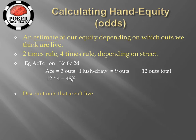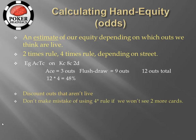Your estimate is always only going to be as good as your understanding of villain's range. For example, in this particular example, sometimes your ten out might be good, or perhaps your ace-high might be good some of the time. So in order to make the most accurate estimate of your equity or your odds as possible, you need to have the best understanding of villain's range as possible.